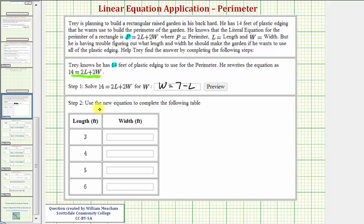Now for step 2, we want to use this new equation to complete the following table. Notice how the table gives us various lengths which is L. We want to find W the width. So when the length is 3, we know L equals 3. So W is equal to 7 minus 3, which is equal to 4.